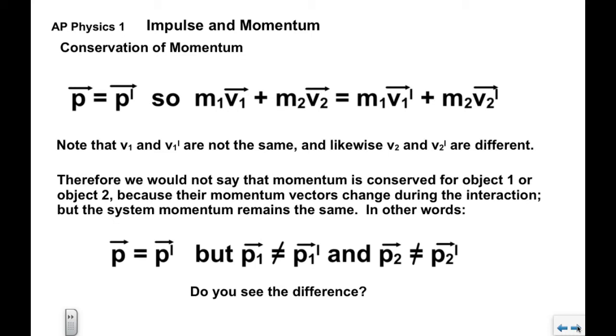Now, the critical point is that we would not say that momentum is conserved for object 1 or object 2 individually, because their individual momentum vectors change during the interaction, but the system remains the same. It's critical that this p equals p prime with no subscript indicates the entire system. We would say that p1 does not equal p1 prime and p2 does not equal p2 prime, because each individual object's momentum changes.